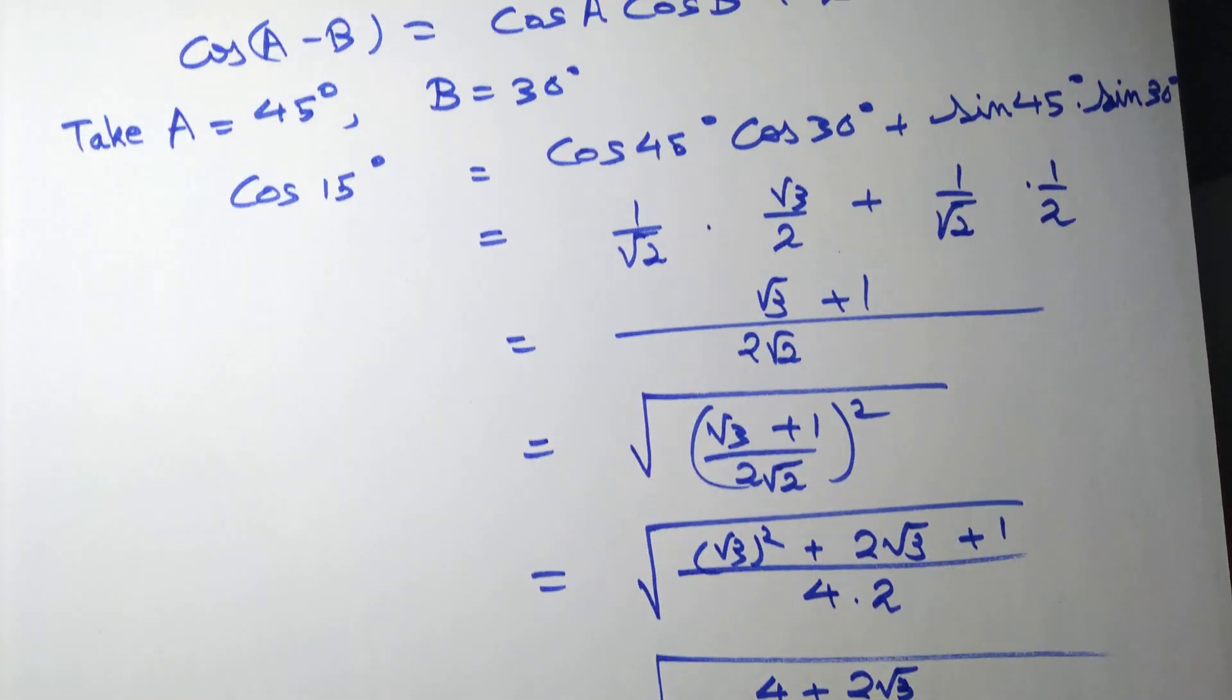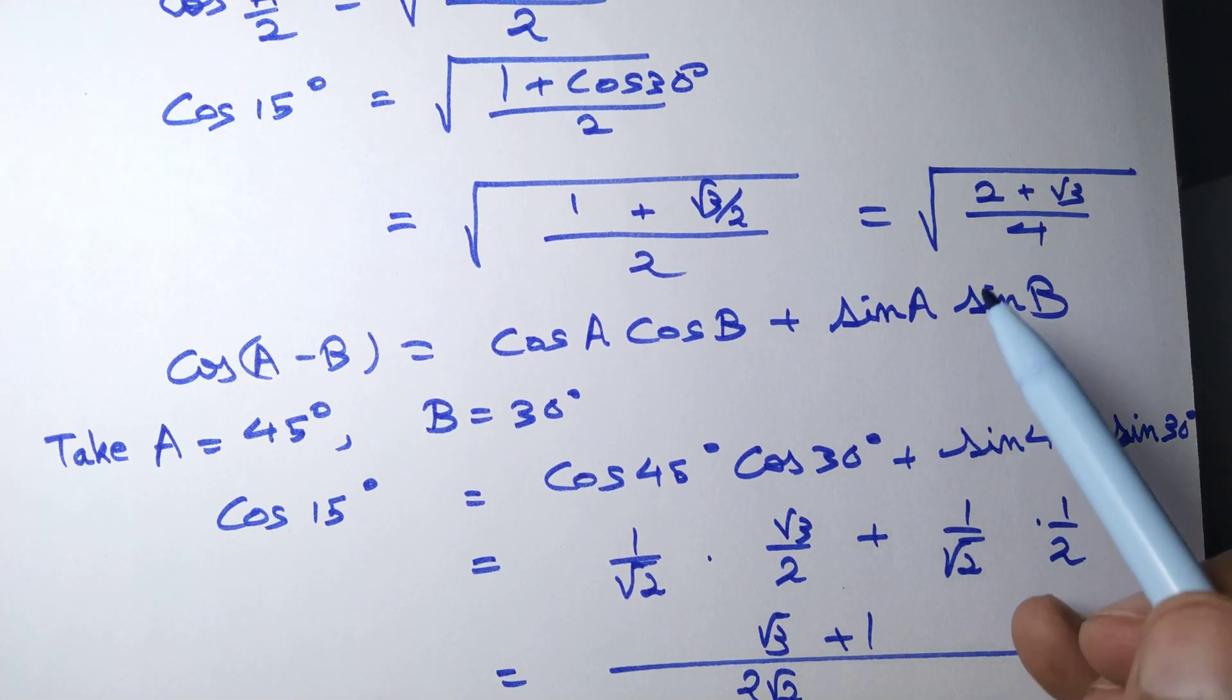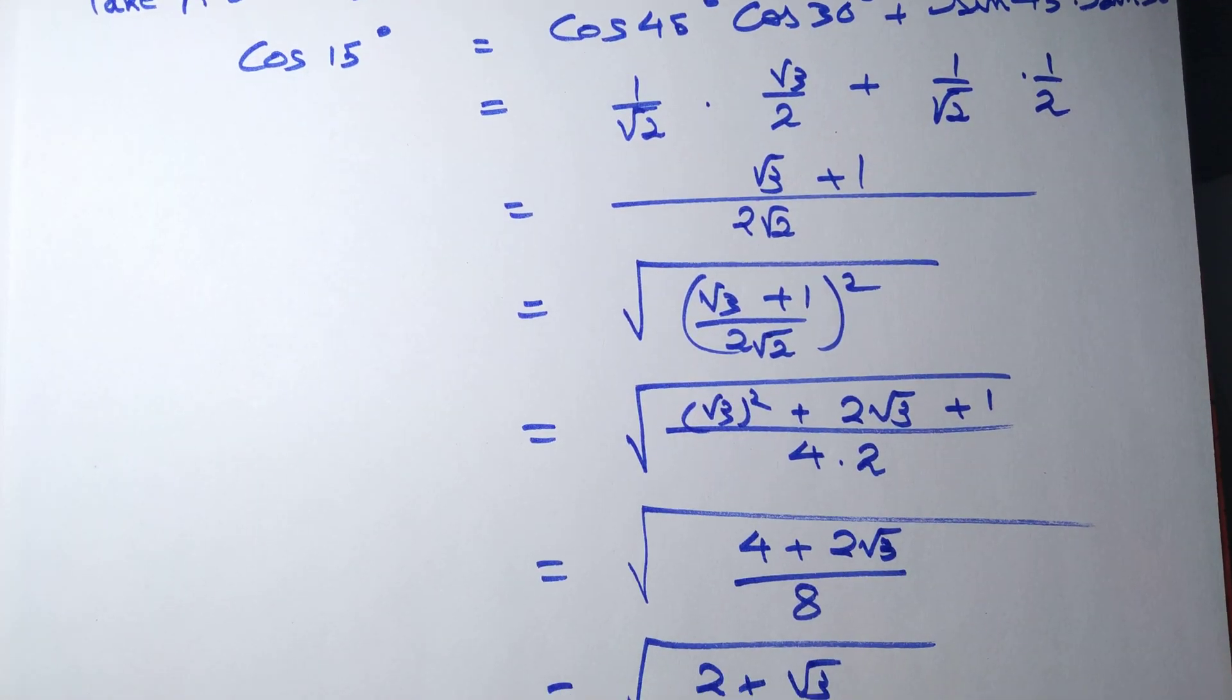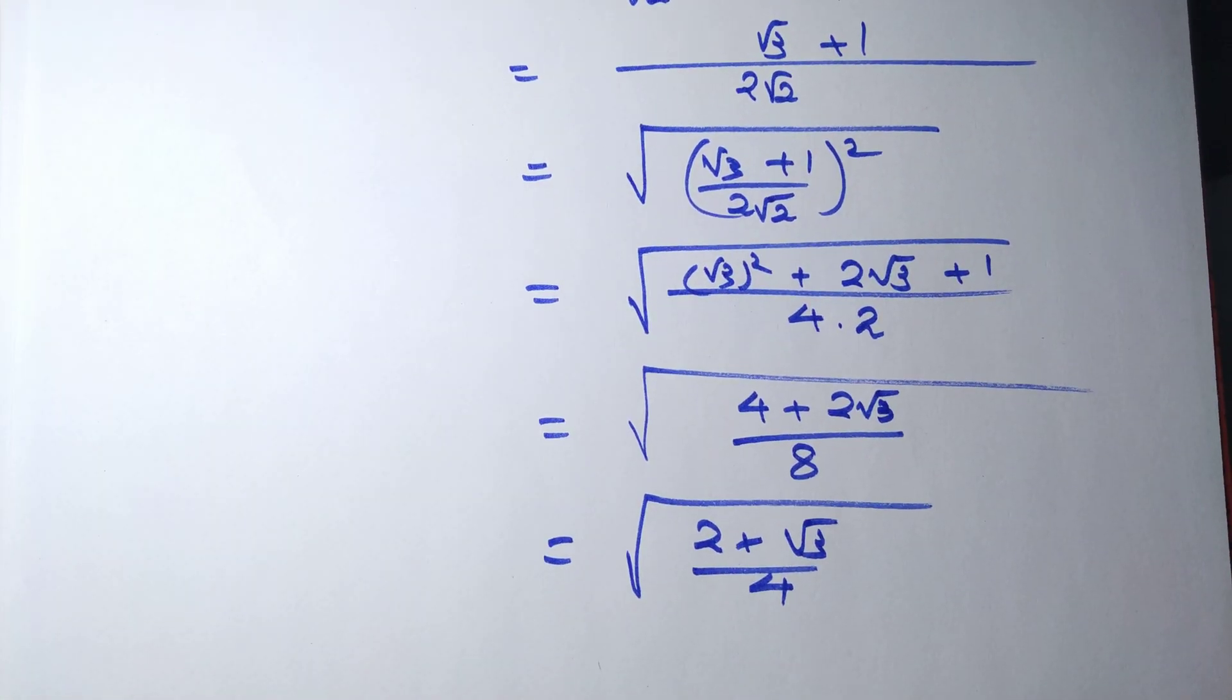Are we getting the same number? Yes! √((2+√3)/4) equals (√3+1)/(2√2), so both methods are correct.